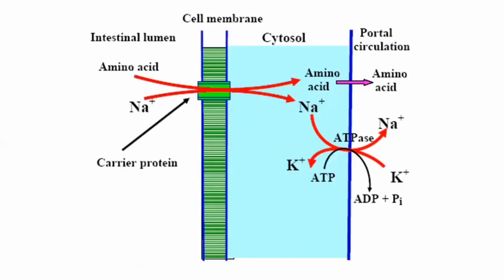The transport of amino acids is similar to glucose transport. Just as glucose was transported through the intestinal cell by a sodium co-transport mechanism — also known as symport — amino acids are also transported in the presence of sodium ions. This symport carrier protein allows passage of two substances: the amino acid attaches to one side and sodium attaches to the other, and both are transported into the intestinal cell together.